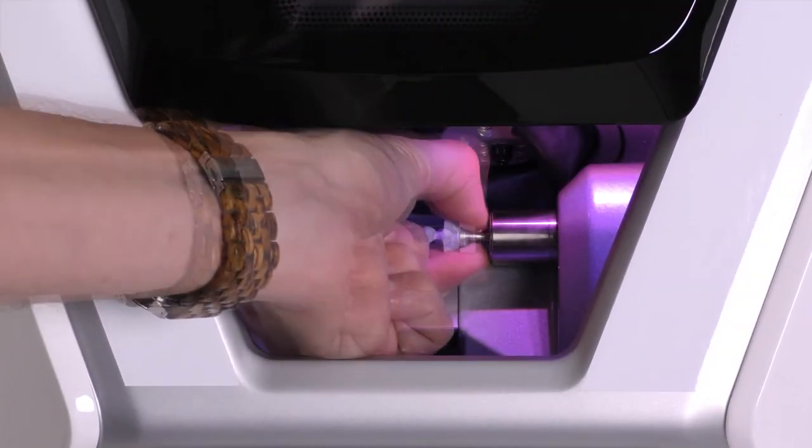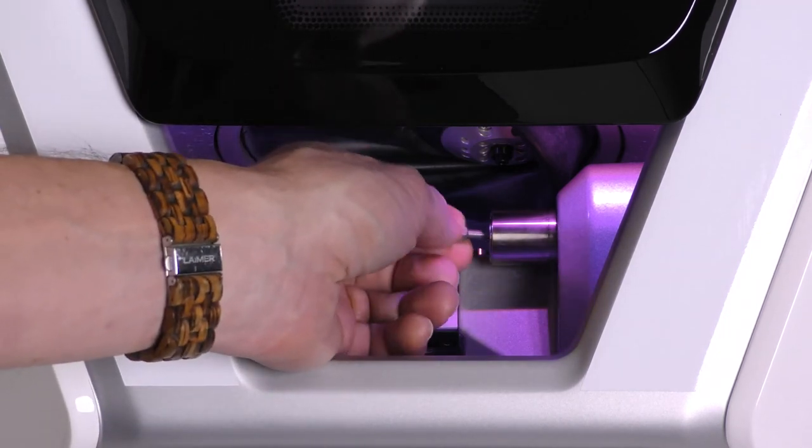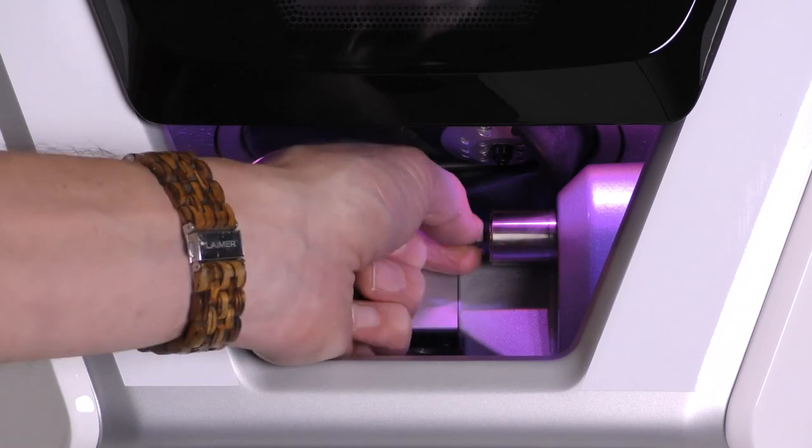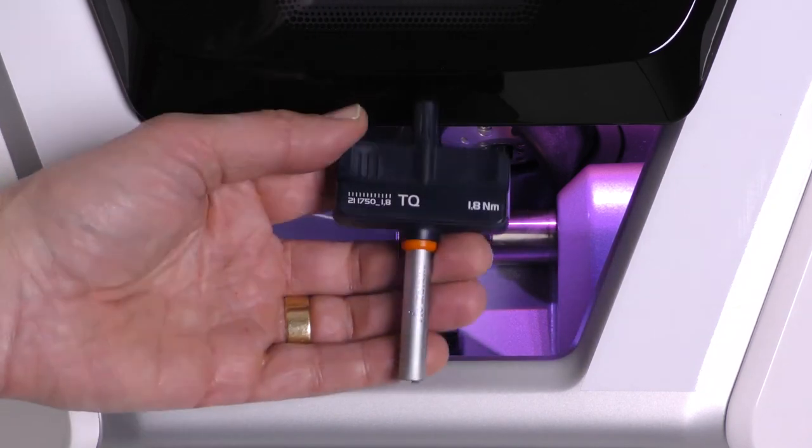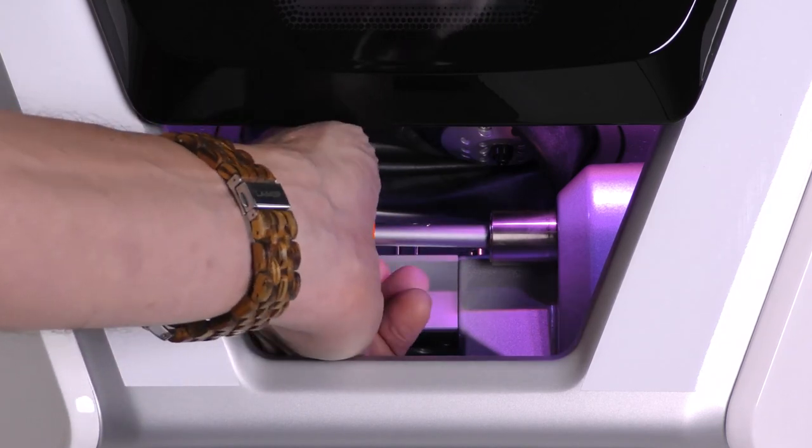Remove the block from the collet chuck. Insert the bit of the torque screwdriver into the collet chuck and screw in the screw. Put the torque screwdriver on the bit and tighten the screw by turning the screwdriver to the torque.